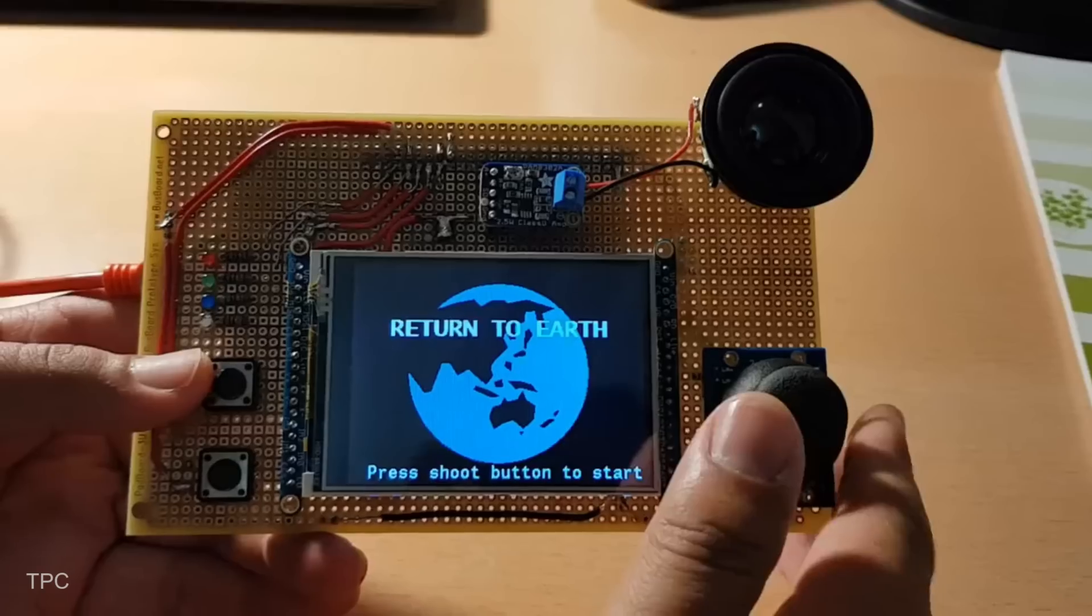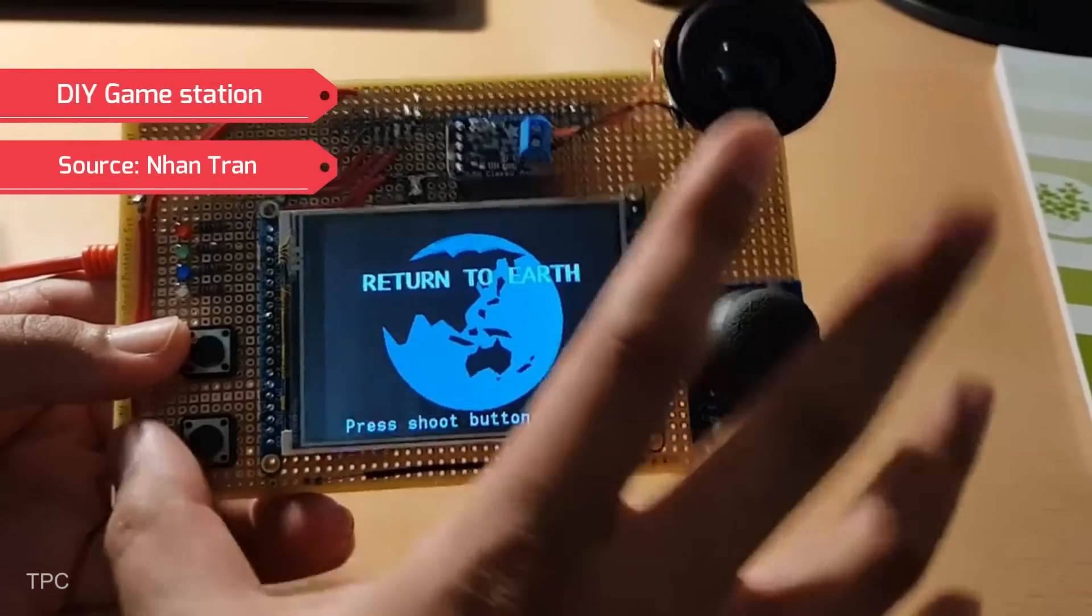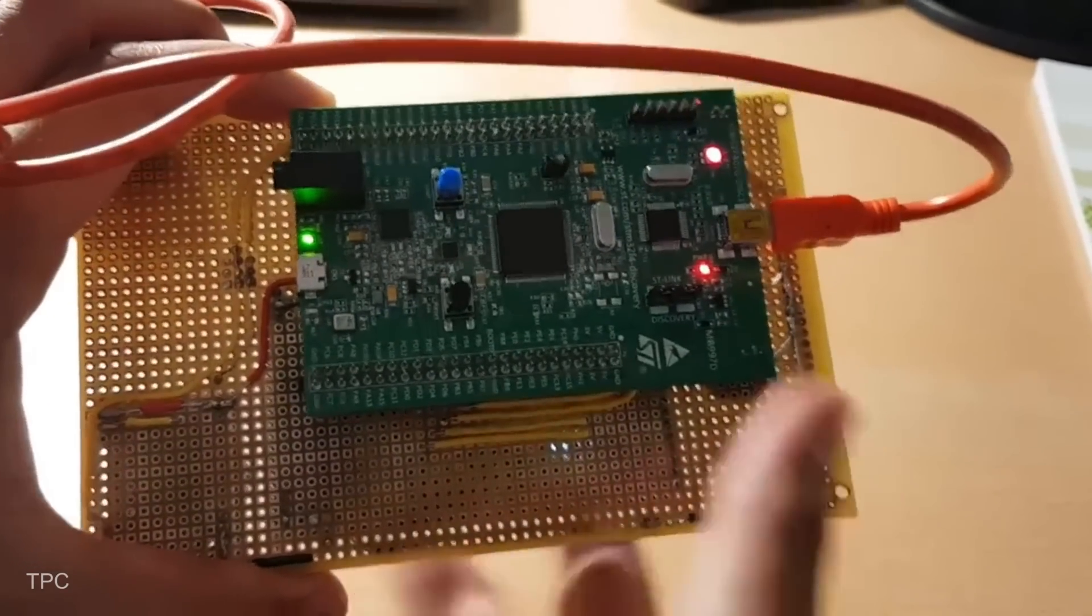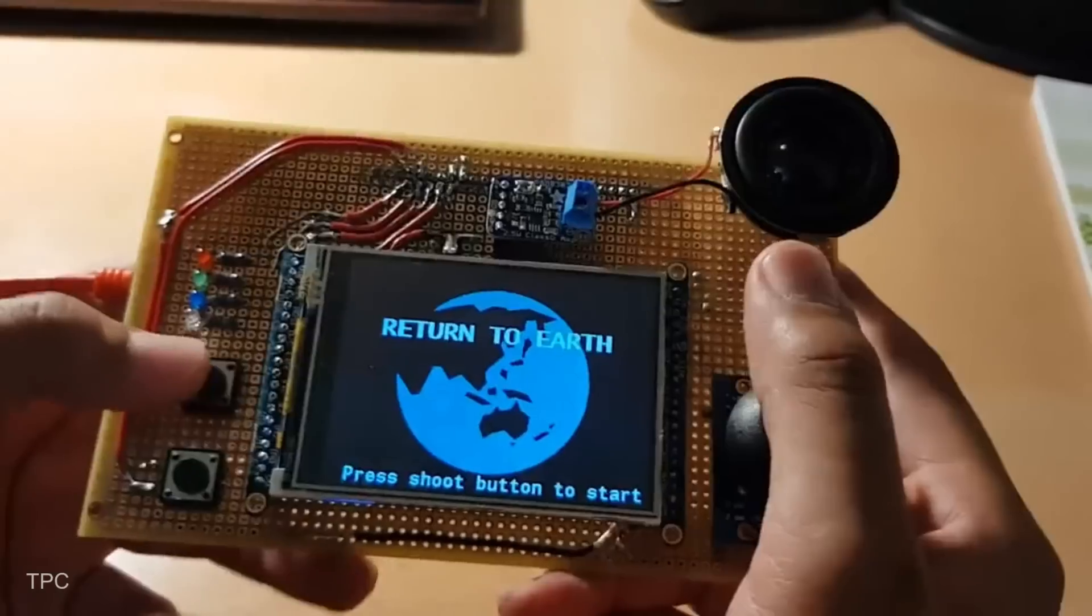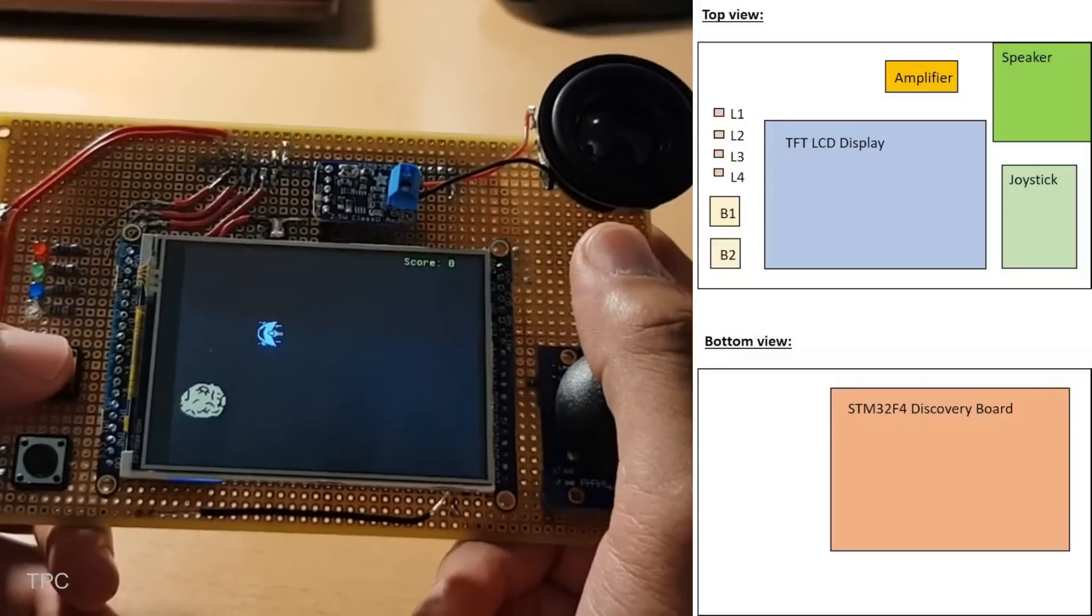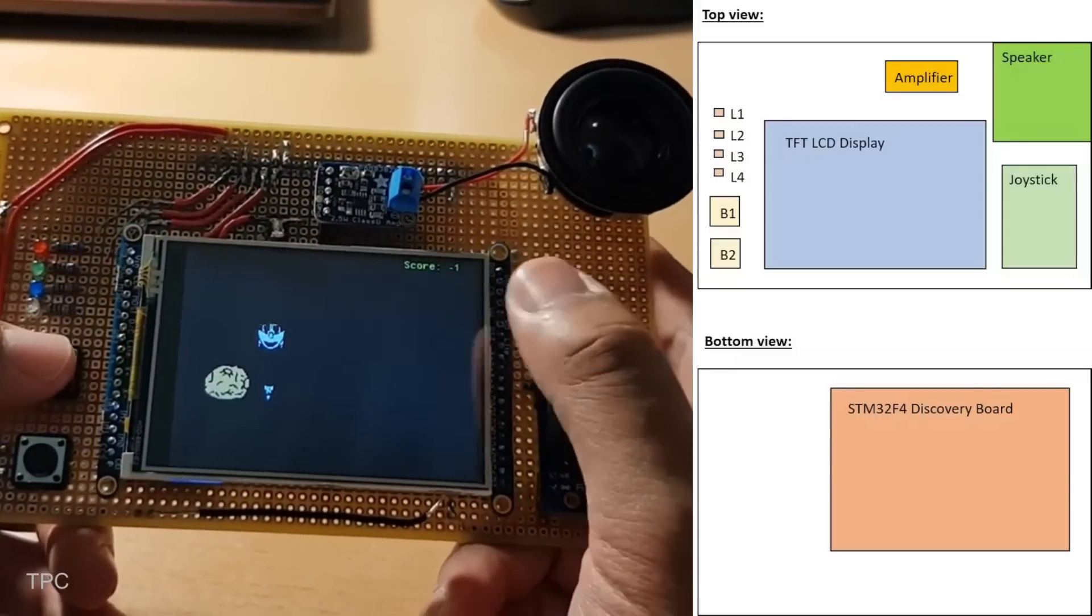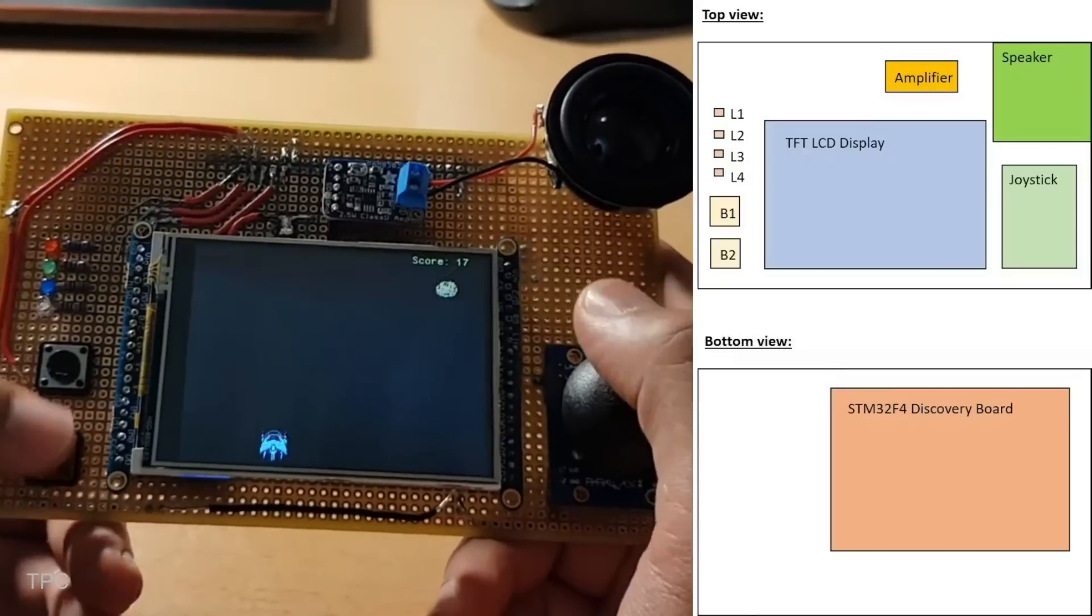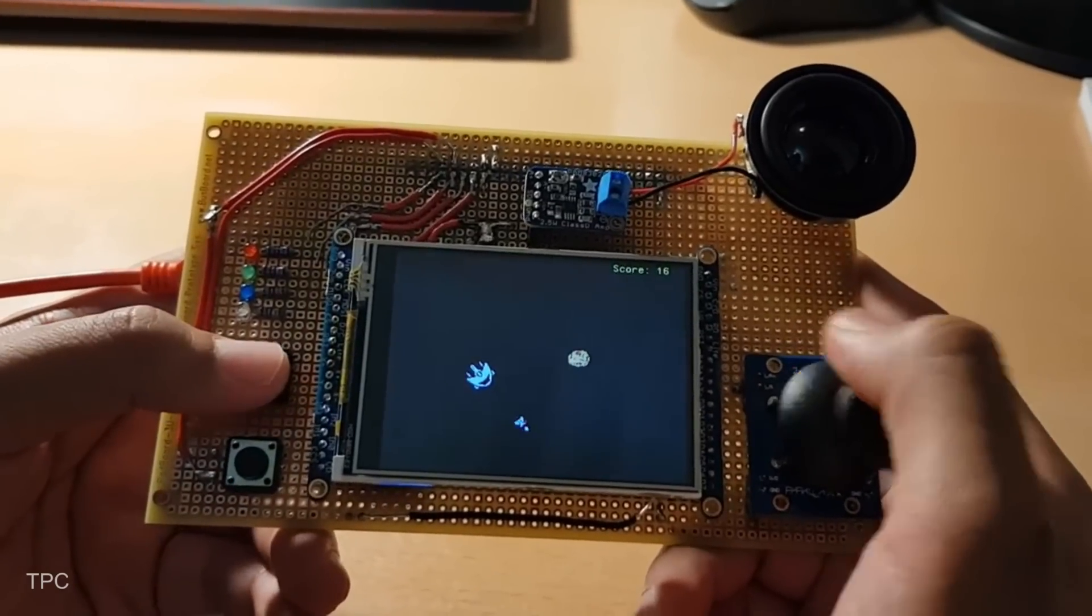Number 3. Our next project is a handheld game console built around the STM32F4 Discovery Board, featuring a fun asteroid shooting game. The console is equipped with a 3.2-inch TFT LCD display, a joystick, buttons, LEDs, and a speaker, making it a complete DIY gaming system.